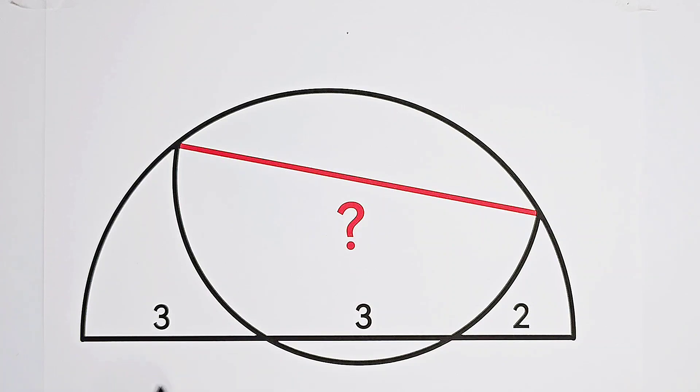Since we're given the length of these three pieces, the diameter of the big semicircle measures 3 plus 3 plus 2 equals 8. So the radius of the big semicircle is, of course, 4. Now we've successfully found the centers.